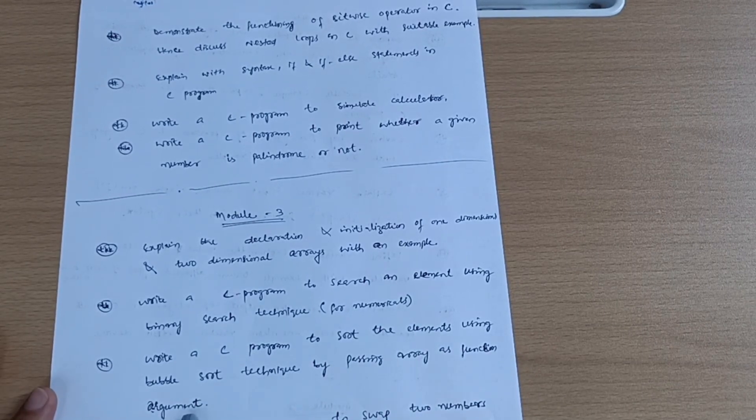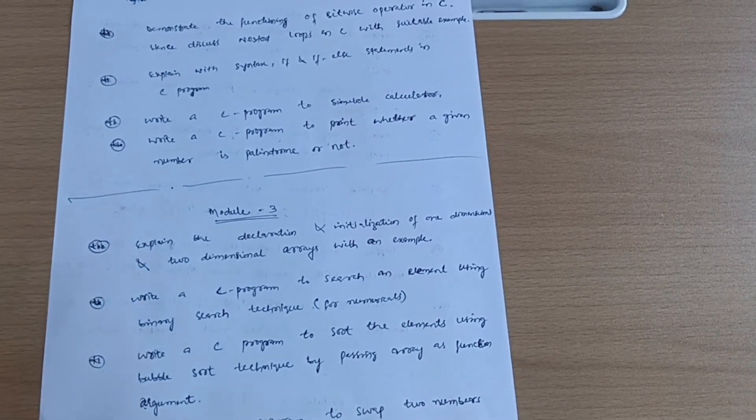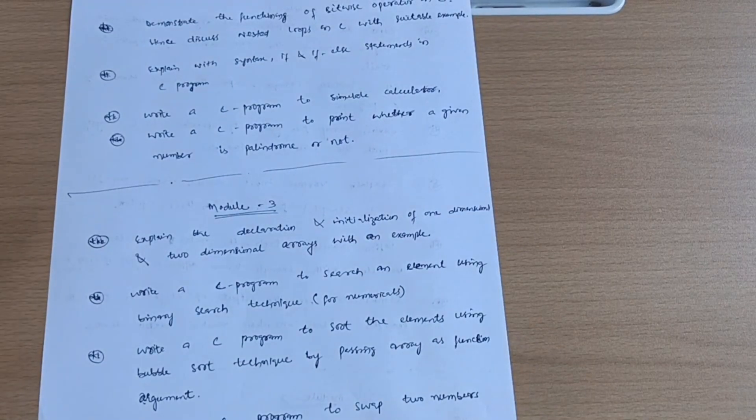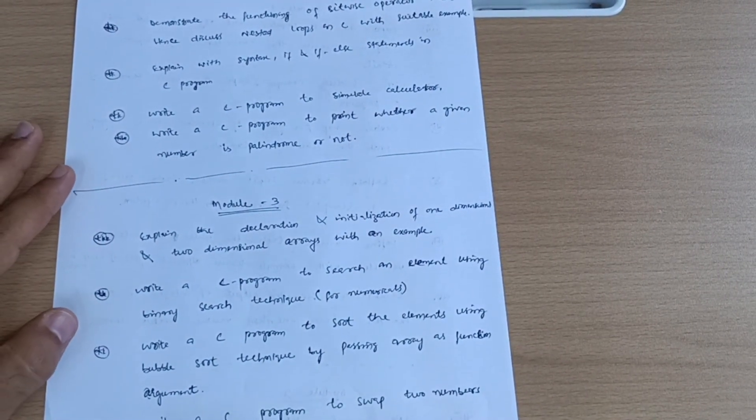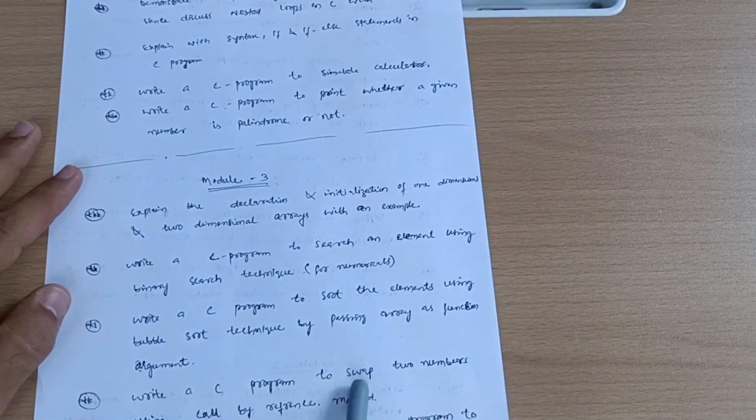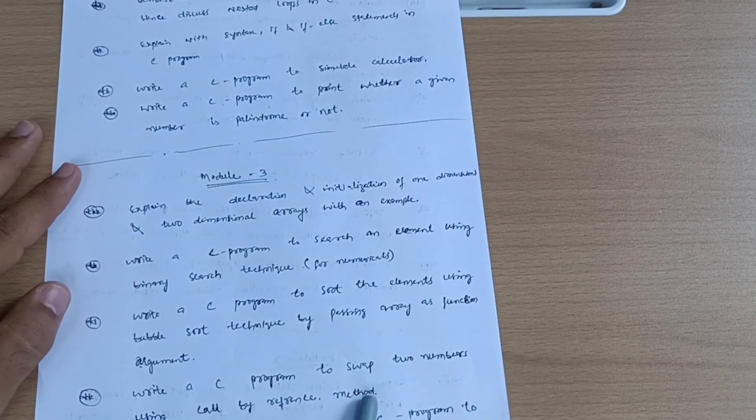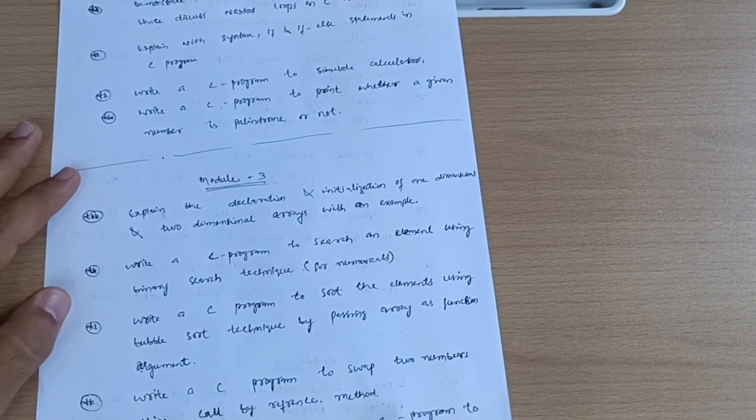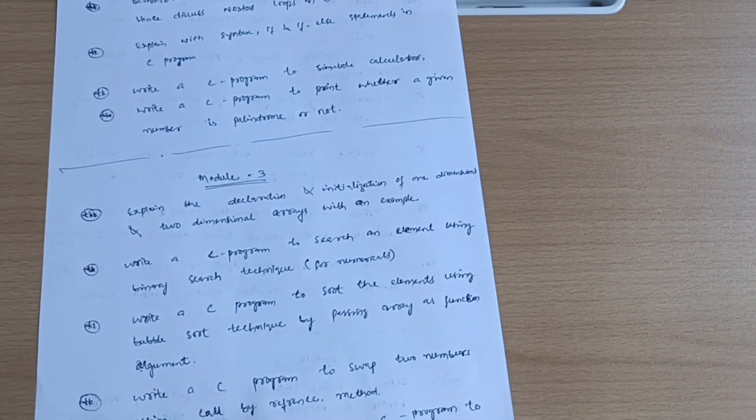Passing arrays as function arguments - this is a super important program which is again and again coming in the VTU examination for all schemes. Write a C program to swap two numbers using call by reference method. What is recursion? Write a C program to transpose M cross N matrix.